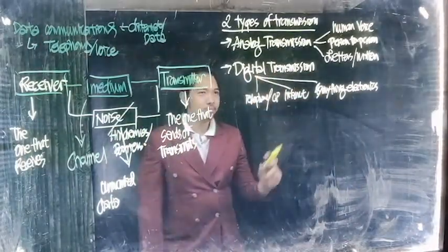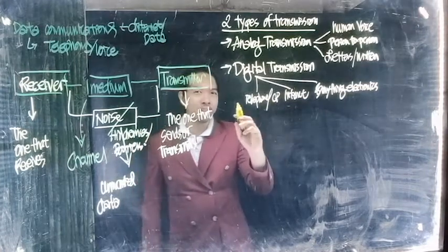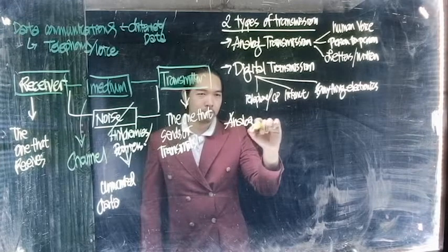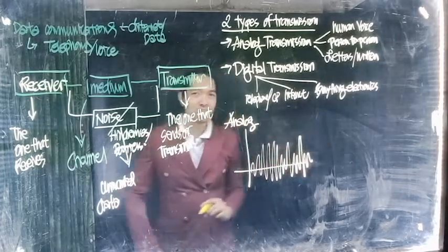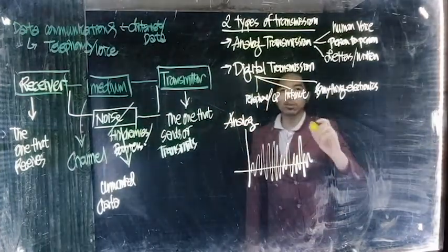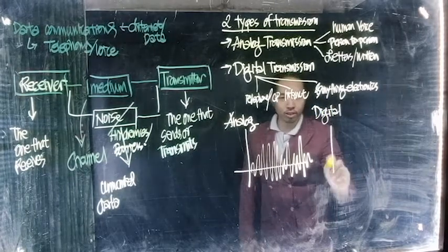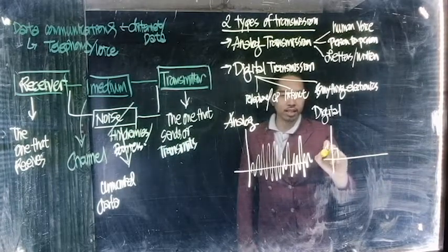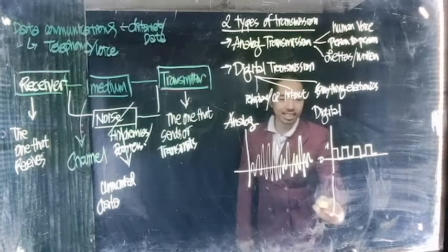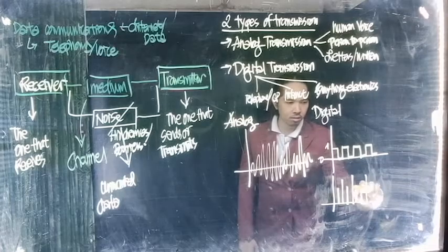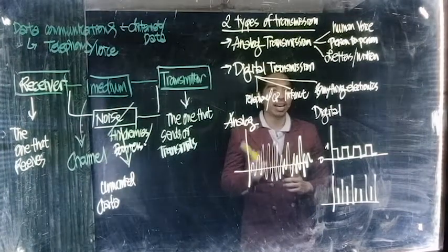Okay, so ano ngayon ang difference ng dalawa? When in terms of signal, yung represented by a signal, ang analog system or analog transmission has continuous wave. That is periodic wave. So that's the nature of analog. Kung yung digital, that would be pulses or a series of ones and zeros. Ganyan na siya mag-signal. Ones and zeros, pulse, so ganyan yung itsura. That's how it's represented.